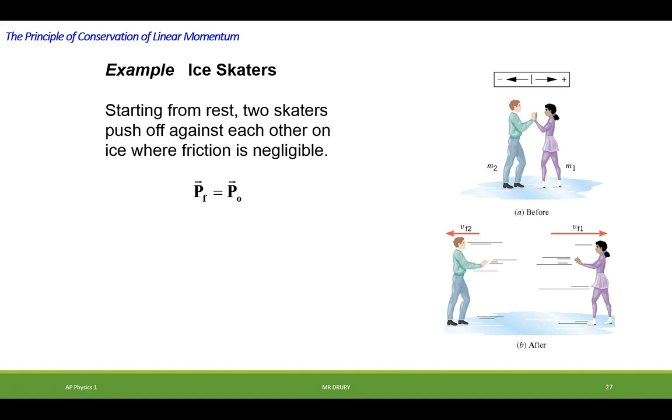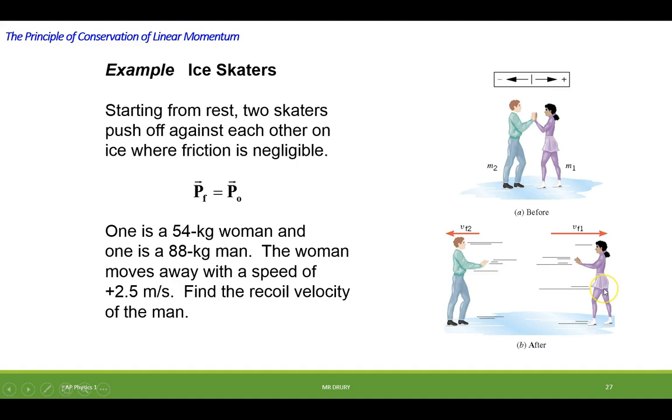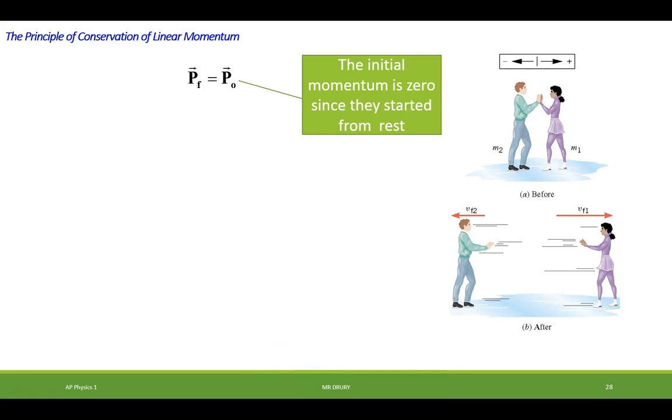And let's actually give some numbers to this. You have a 54 kilogram woman and an 88 kilogram man. The woman moves away with a speed of 2.5 and we would like to know what the speed of the man is. So if she moves away with a speed of 2.5 to the right, then the right must be positive. And he's going to move in the negative direction. And notice what is the speed to begin with? That's important.